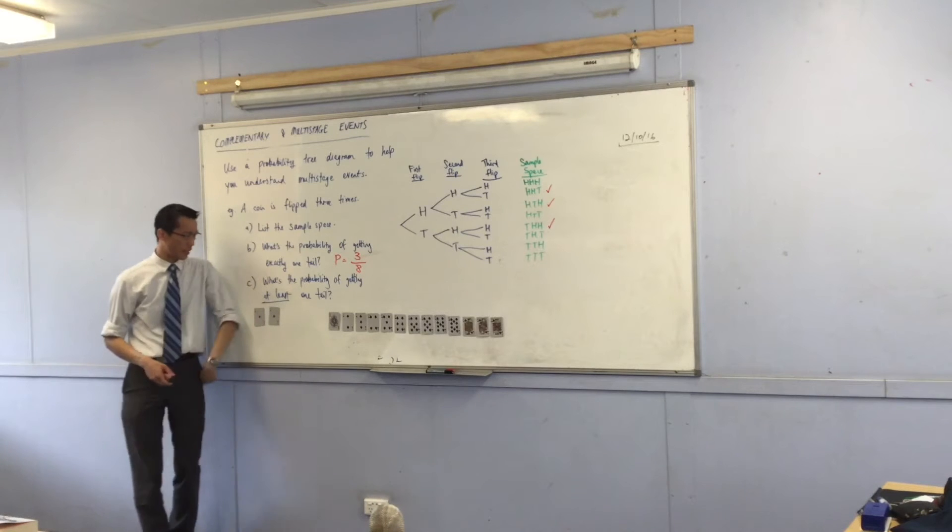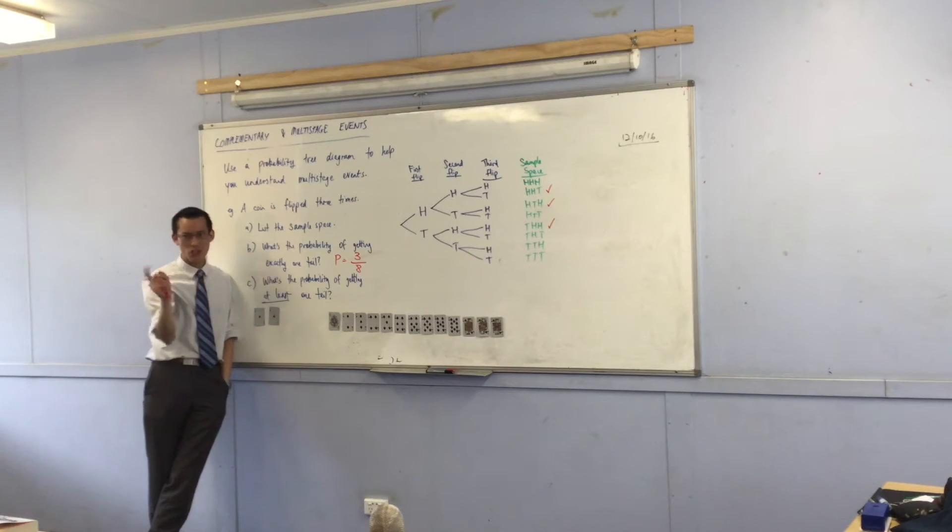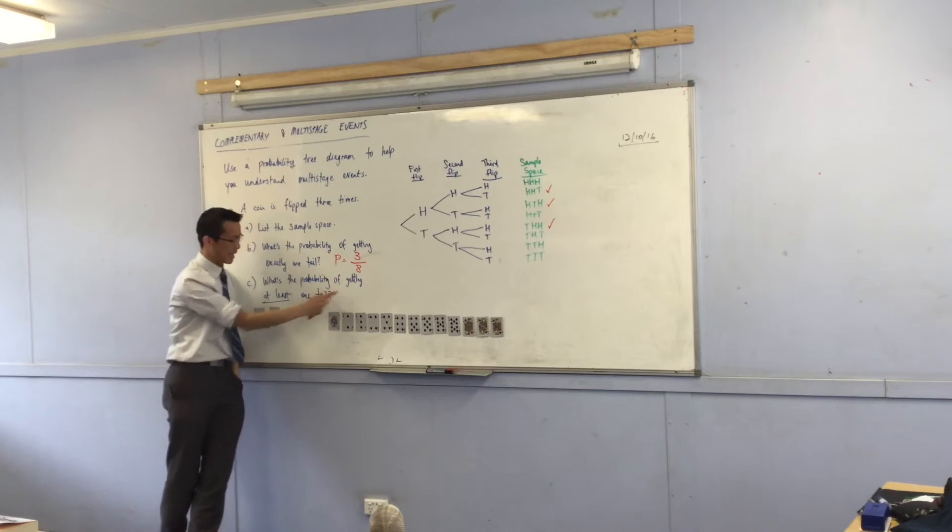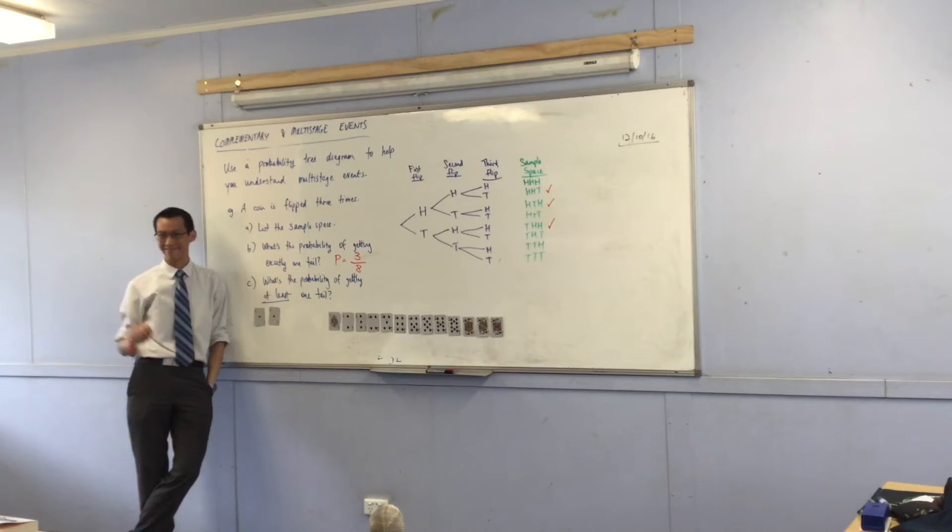Now, have a look at this last one here. Again, I'm going to use the same tools to help me. What's the probability, here's the question you maybe were thinking of, of getting at least one tail? So, that's one tail, or two tails, or three. Okay?